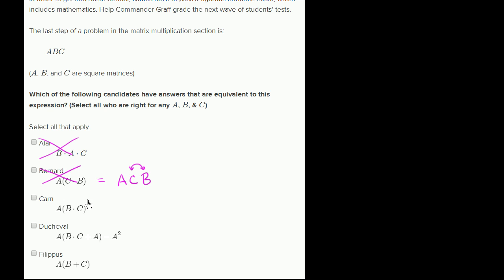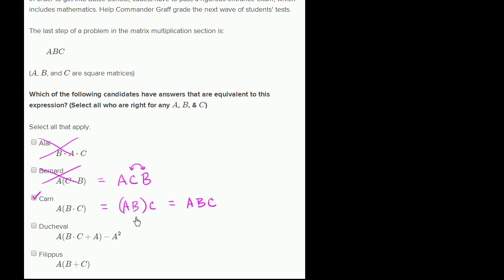A times (B times C): we've already seen matrix multiplication is associative. So this is the same thing as A times B times C, which of course is the same thing as ABC. So what Karin has right over here is correct — that is equivalent for any square matrices A, B, and C.